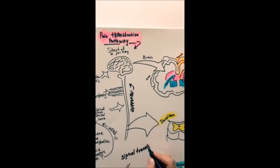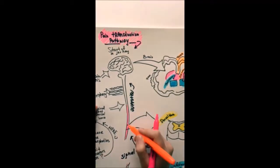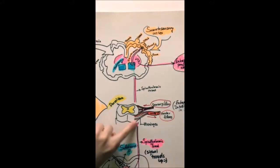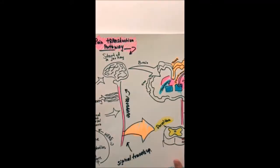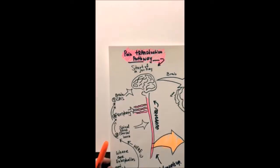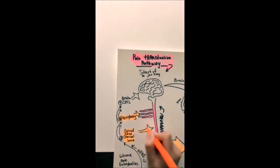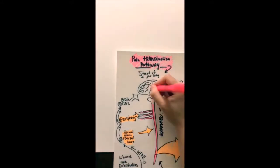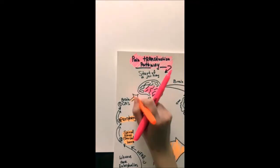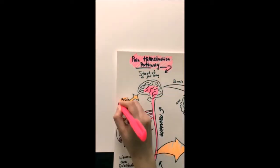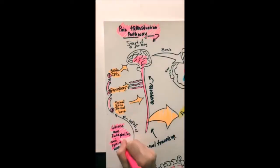To summarize, pain travels up the spinal cord and then to the dorsal horn via the sensory fibers. The signal goes from the periphery to the spinal cord to the central nervous system. My receptors are located throughout this pathway.